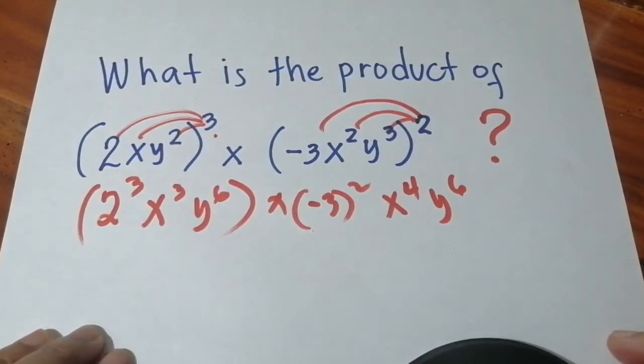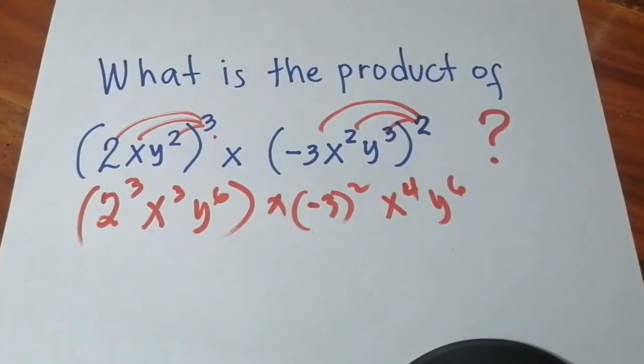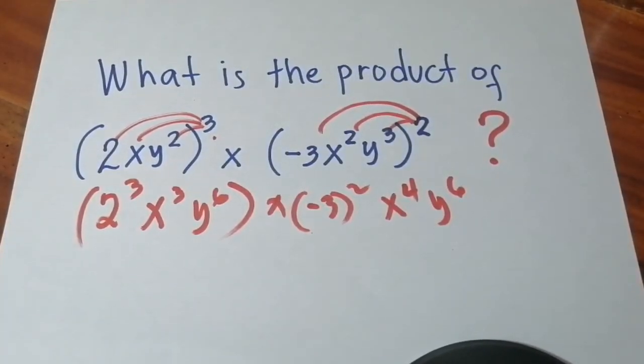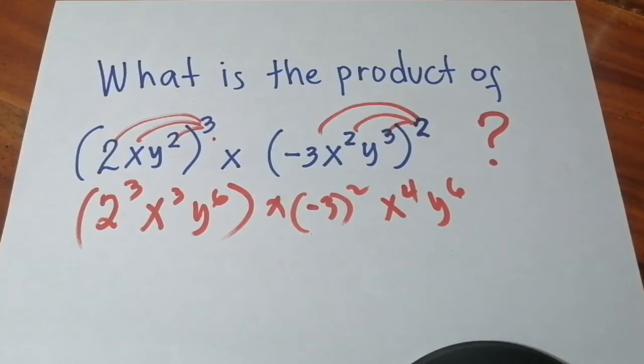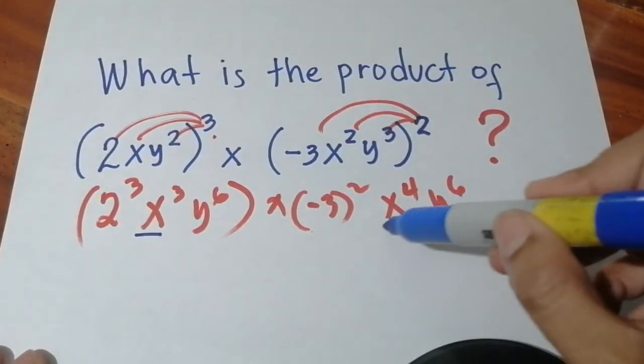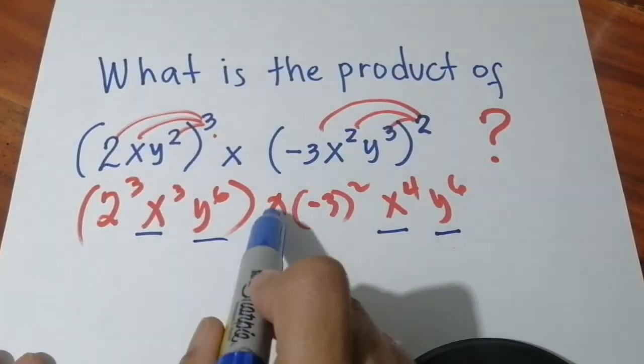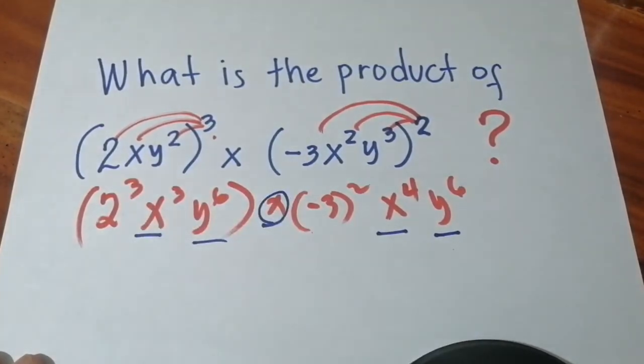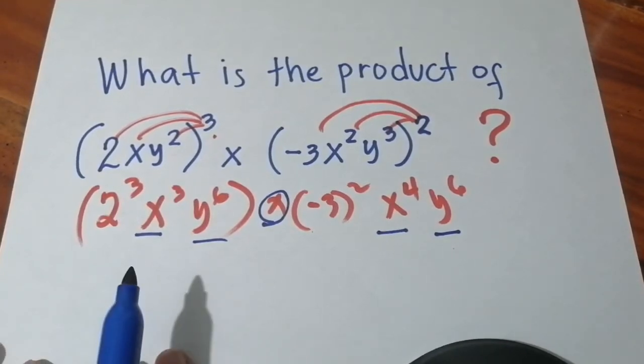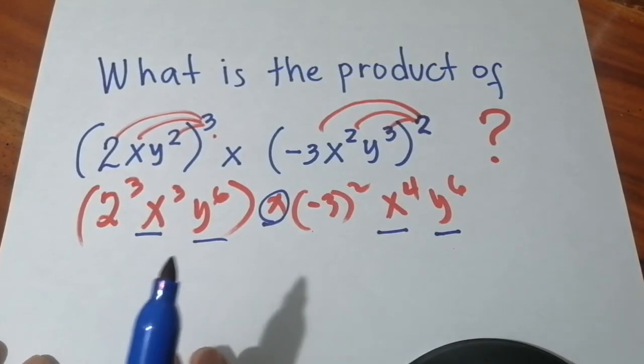Now that we are done distributing the outside exponent, we just have one exponent. Now we just have to combine exponent with the one that has the same variables. Since the equation here is multiplication, what do we do with the exponent that has the same variable? We add them.